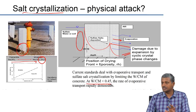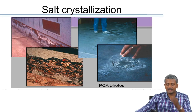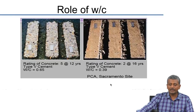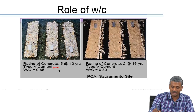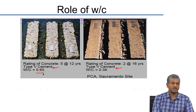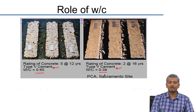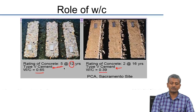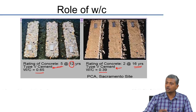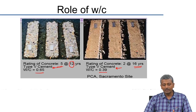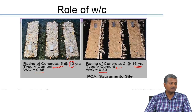Research shows that if you have water-cement ratio less than 0.45, the rate of evaporative transport — the rate at which suction happens — diminishes significantly. So 0.45 makes sense not just from a chemical point of view but also from a physical attack point of view. Evidence of salt crystallisation from the PCA long-term study on concretes made with Type 5 cement: one with water-cement ratio of 0.65 had a visual rating of 5 (maximum deterioration) after 12 years, while one with water-cement ratio 0.39 still had a rating of 2 after 16 years, showing the critical importance of water-cement ratio.